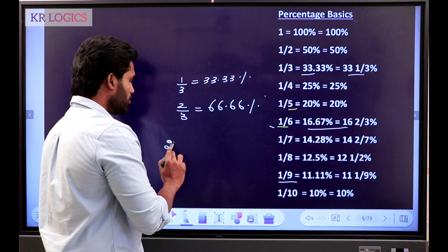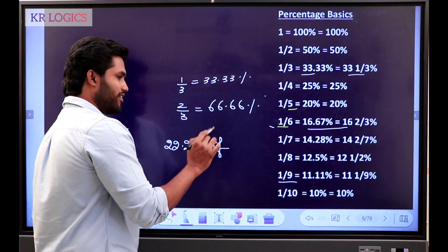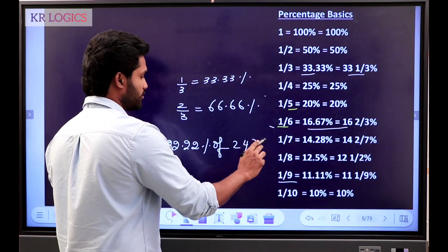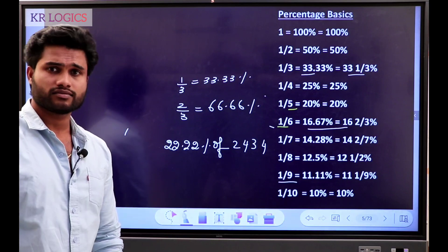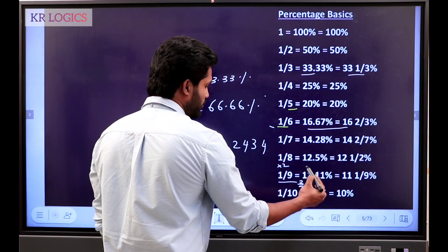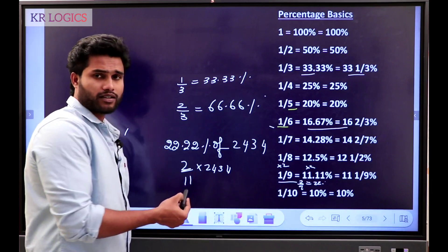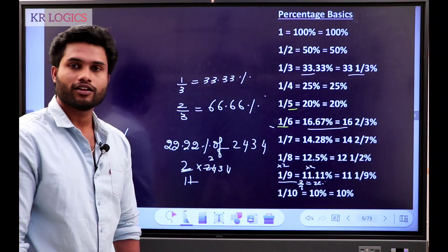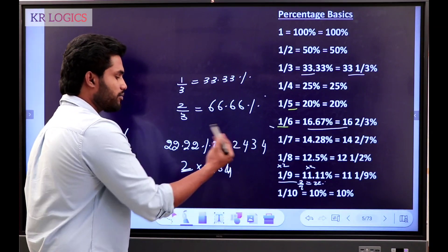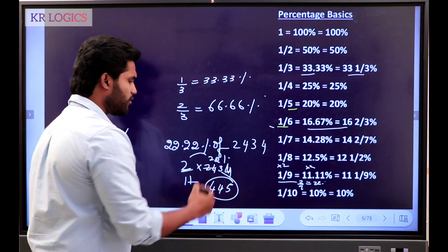For example, let's say 22.22 percentage of a number. 22.22 — because we make 11.11 by 9, we multiply by 2, so 22.22 gives us 2 by 9. This value is 2 by 9. 2 by 9 of 2434 — 2 into 221 is 442. Approximately 444, 445. That's the simplification.